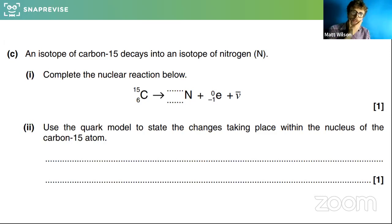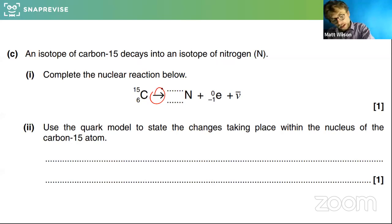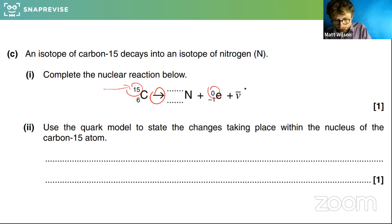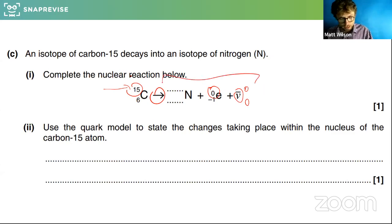I can see we're converging on some answers. Whenever you see a nuclear reaction equation with one of these arrows in the middle, the instruction is: get the numbers to balance on the top — get the numbers to add up to the same thing on the left and right hand side of the arrow, and the same on the bottom numbers. I have a 15 here on top, a zero here, and the neutrino things also have these numbers being zero.